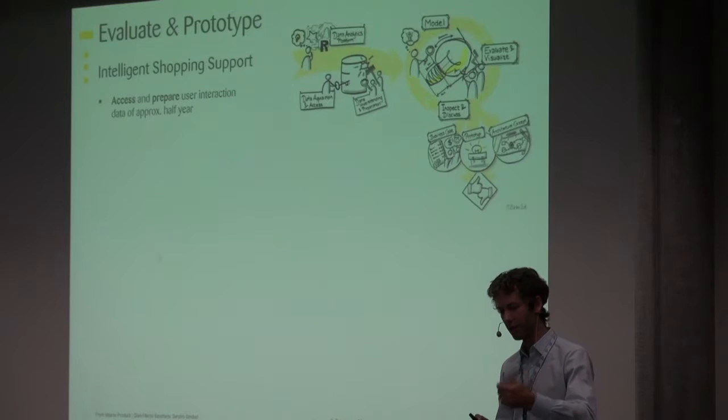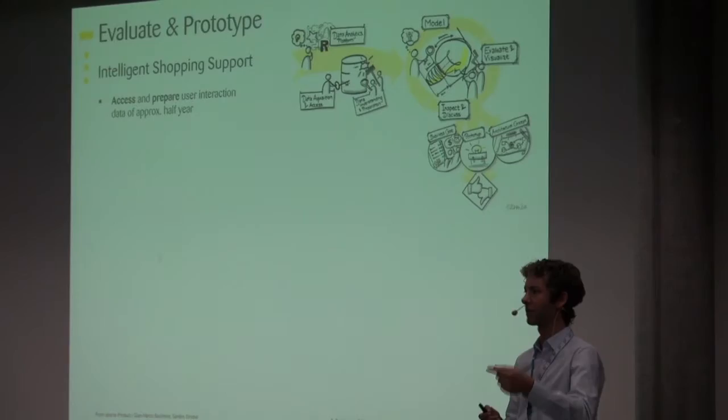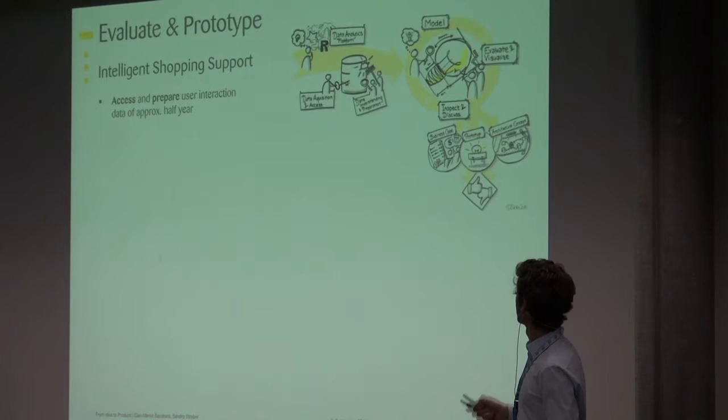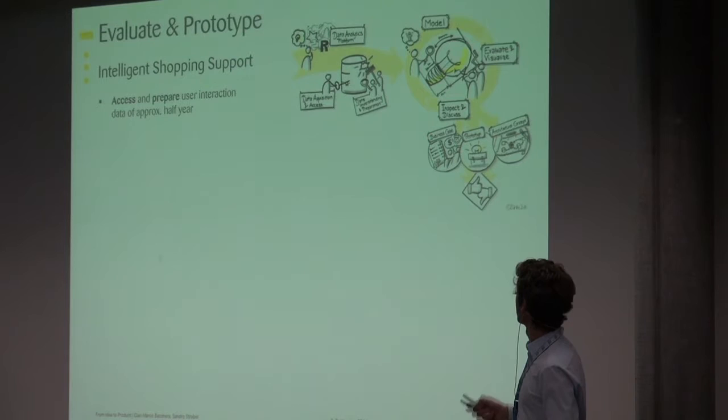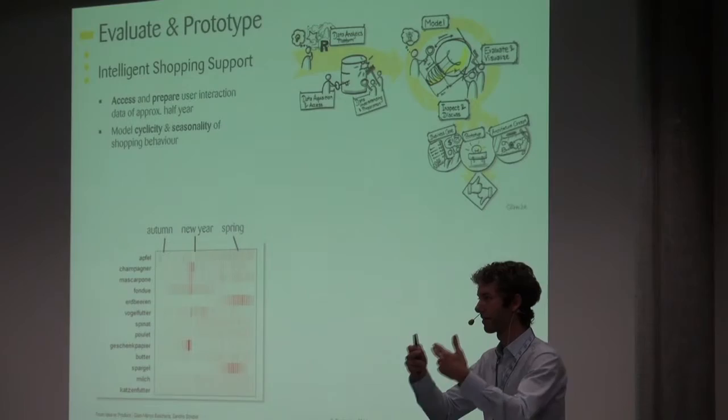But there were a couple of things which had to be cleaned. For example, sometimes the interaction is stored and the item is put on the list and it's put on the list again before it was taken off, which was due to some synchronization. And there were a couple of things which you had to clean up. But it wasn't too big of a deal. And then we went into this modeling phase. And there are a couple of models and results I want to show you that we delivered. One is regarding the cyclicity and seasonality.